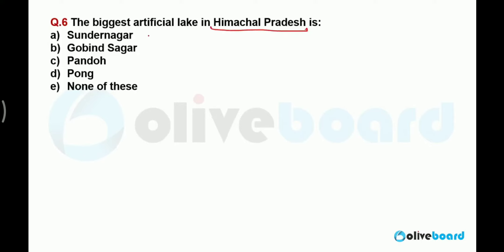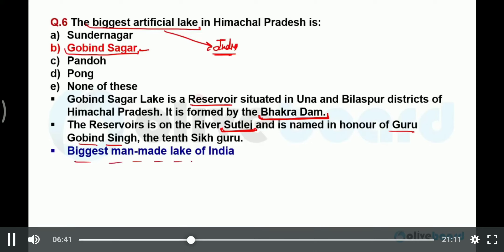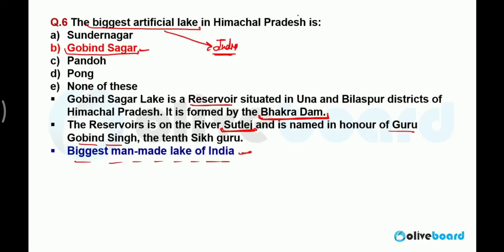The biggest artificial lake in Himachal Pradesh is Gobind Sagar Lake. In fact, Gobind Sagar Lake is the biggest artificial lake in India — not just in Himachal Pradesh. It is a man-made lake situated on the reservoir of Bhakra Nangal Dam on the Sutlej River. Its name is derived from the tenth Guru of the Sikh community, Guru Gobind Singh. It is the largest man-made lake in India, situated in Himachal Pradesh.